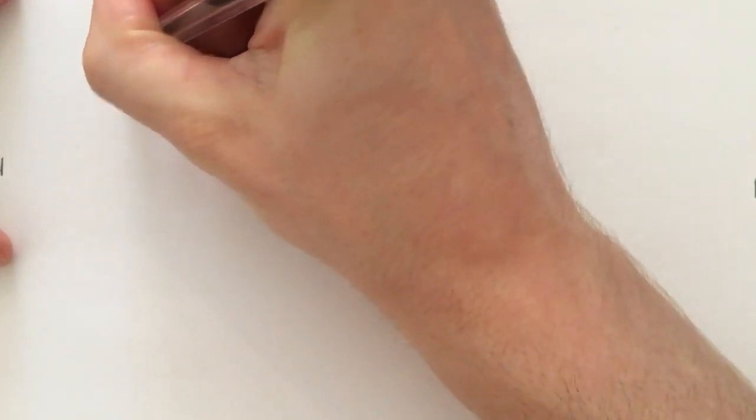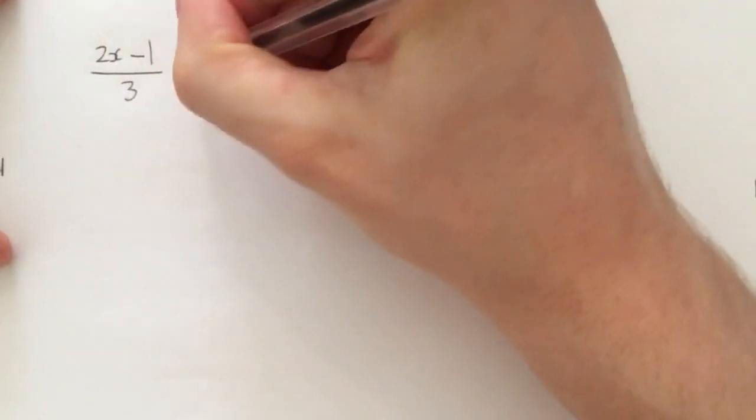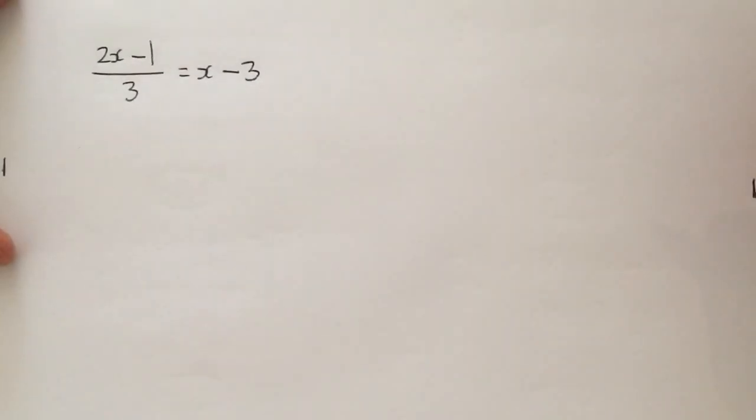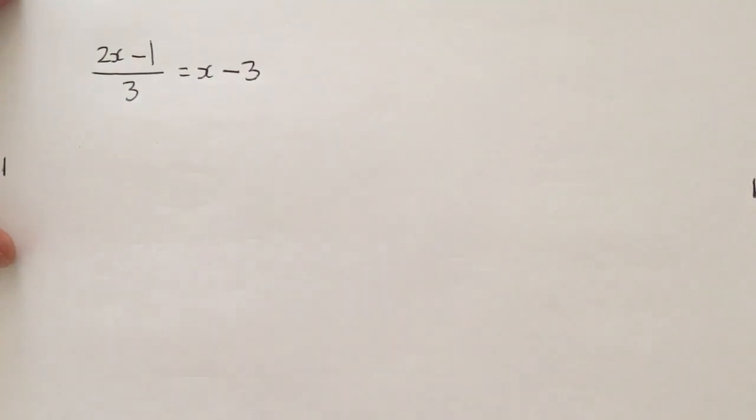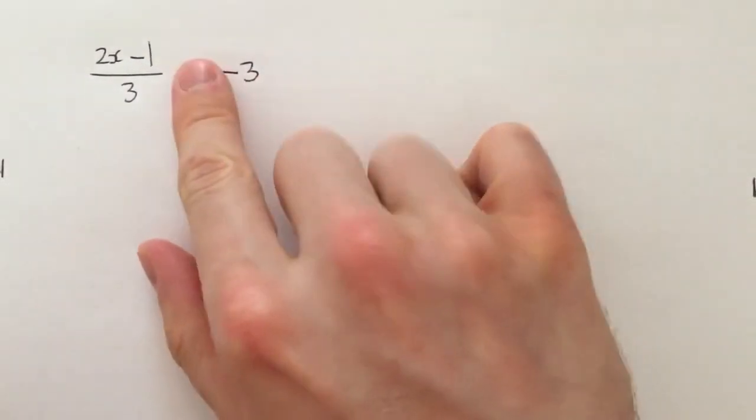I could have 2x minus 1 over 3 equals x minus 3, and they'll tell me to solve this equation. Okay, a few things to note before we even begin. Firstly, there are x's on both sides of the equal sign, so we know we're going to have to deal with that eventually.